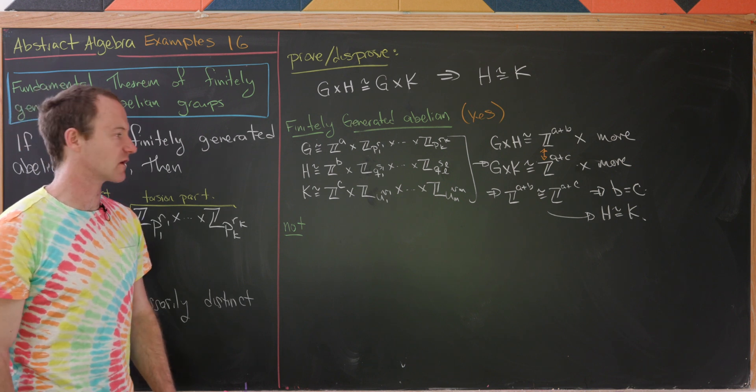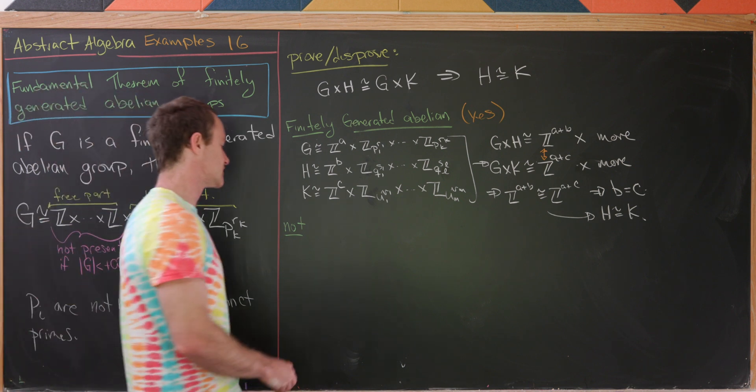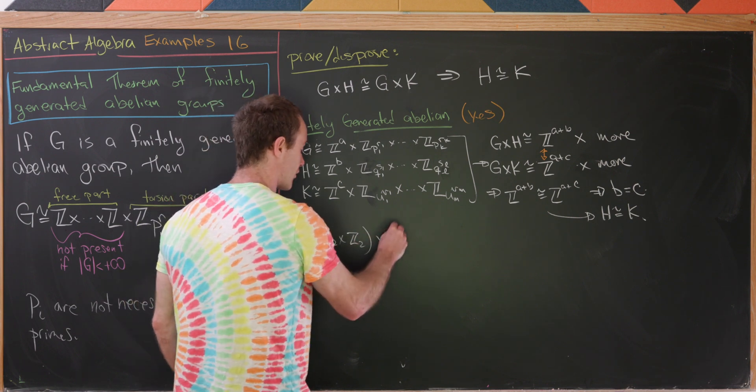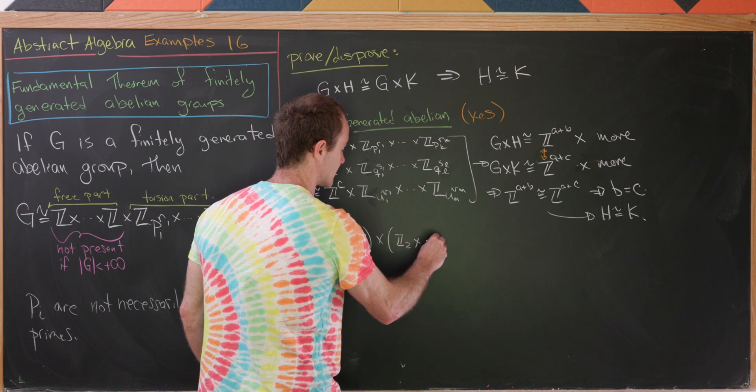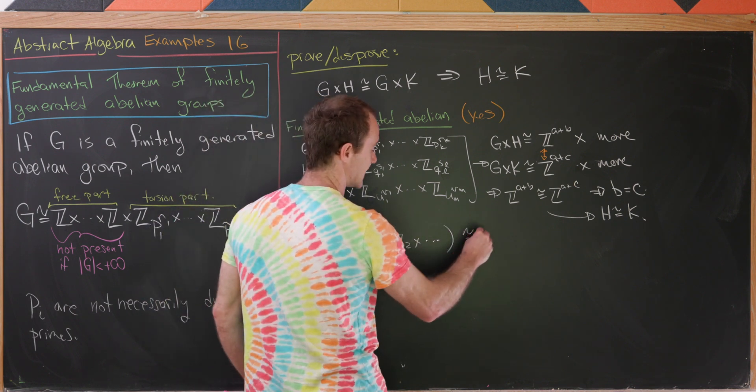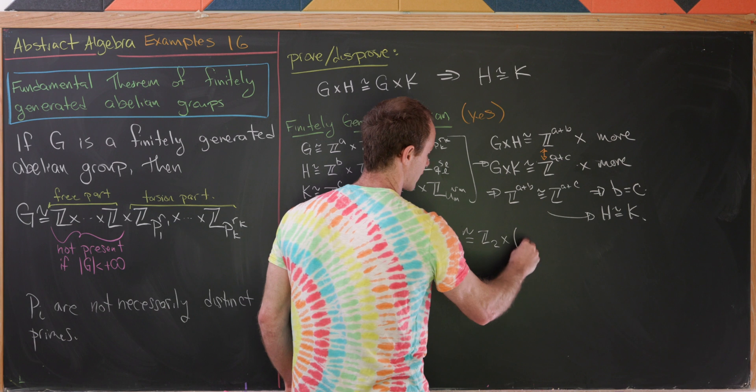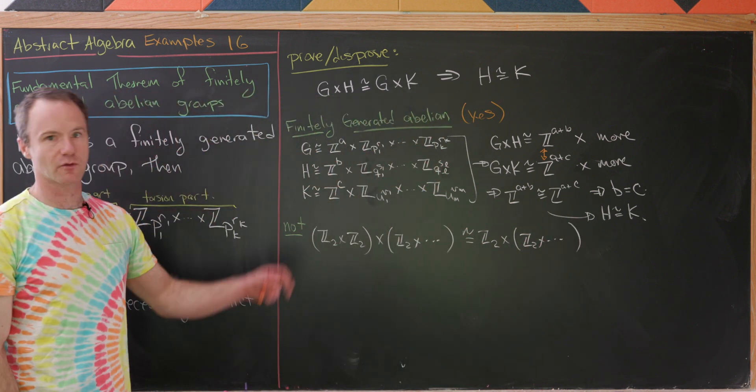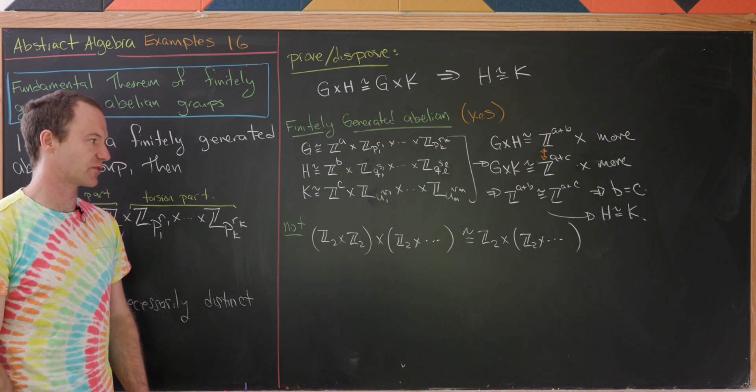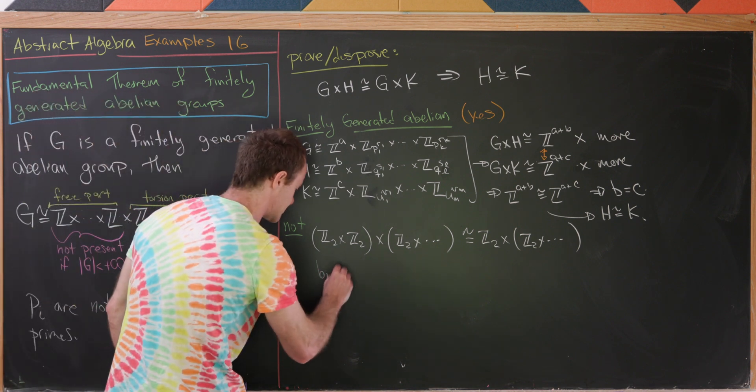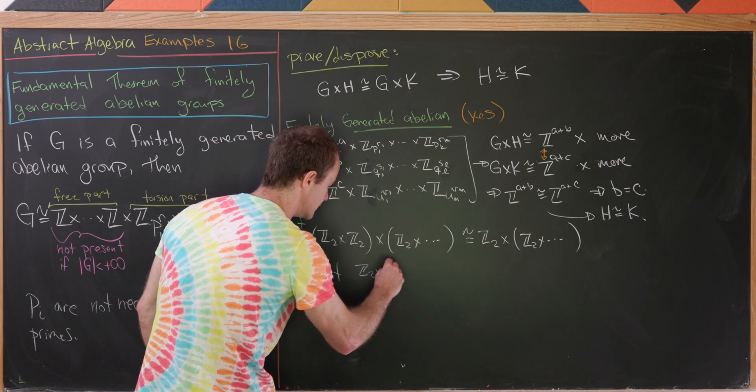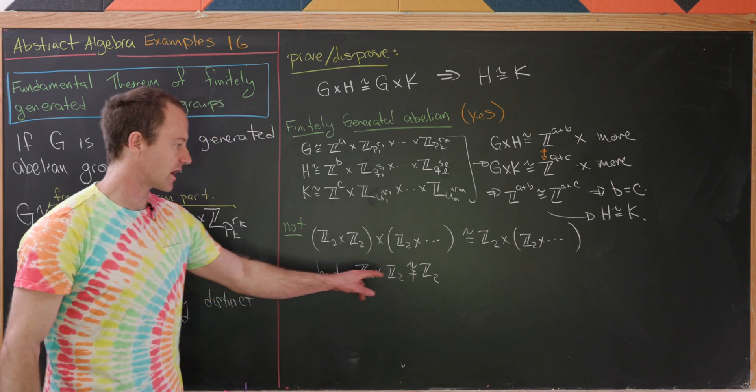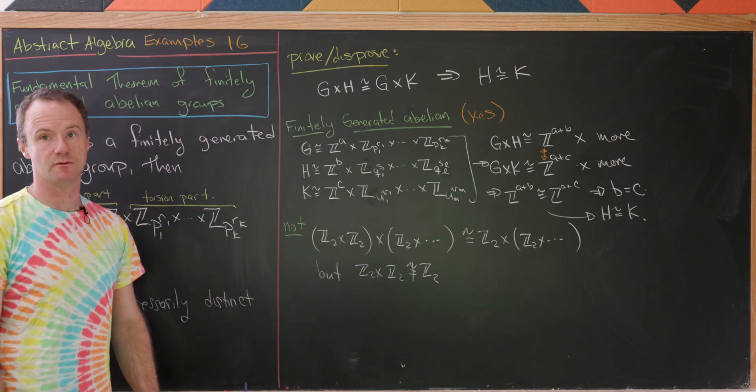And we can look at that with our last example. So let's notice that Z2 cross Z2 cross an infinite product of Z2 is most definitely isomorphic to Z2 cross an infinite product of Z2 because either way you slice that you have an infinite product of Z2's. But it's pretty clear that Z2 cross Z2 is not isomorphic to Z2. This one has four elements and this one only has two.